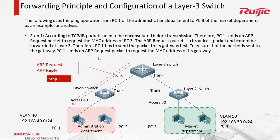Now let us see the steps of this project. Step 1: PC1 needs to ping PC4 in another department. Because the destination is in another subnet, PC1 will use the gateway's MAC address as the destination MAC address. So for encapsulating the packet, PC1 will send an ARP request first — but this ARP is requesting the gateway. We need to get out of this company first, so we go to the gateway here. Then the layer 3 switch will reply to it.